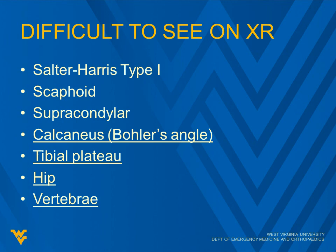Many times we just treat them as if the fracture is there. Especially with a supracondylar, there's not as much overlying bone, so we rely more on our x-ray findings. But for those last four, we definitely typically turn to a CT scan sooner.